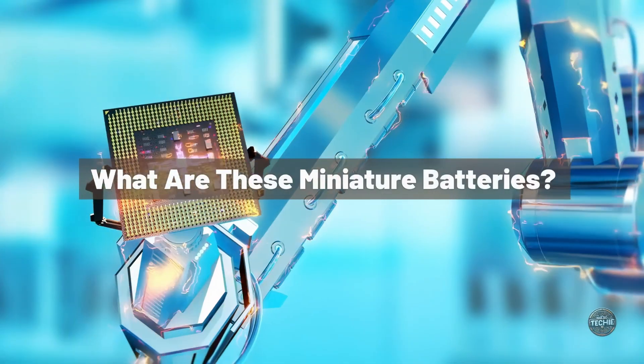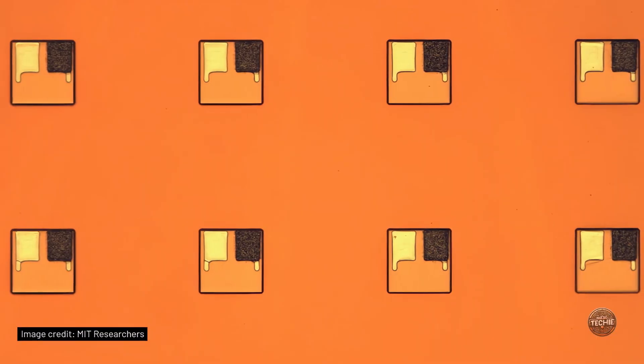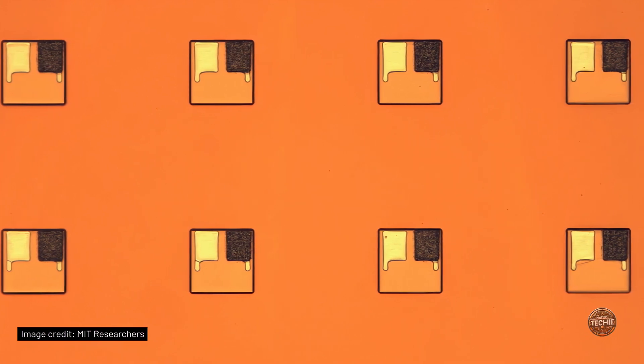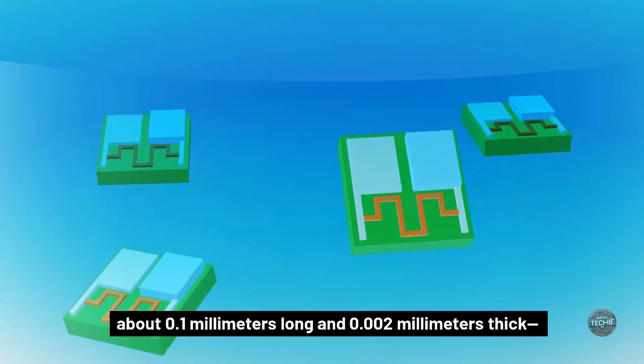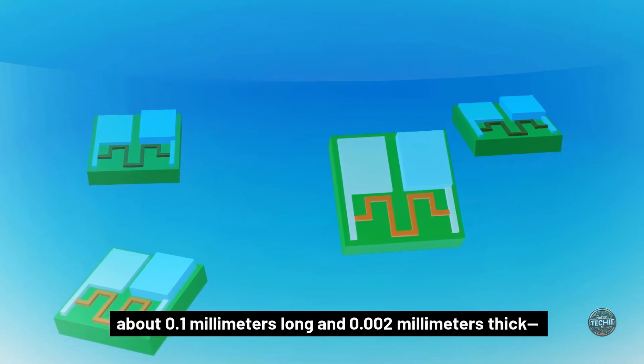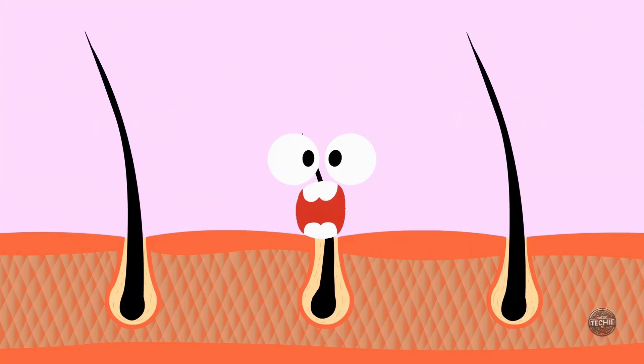What are these miniature batteries? The MIT team has created zinc air batteries so tiny that they are smaller than a grain of sand. To put it in perspective, these batteries are about 0.1 millimeters long and 0.002 millimeters thick. That's thinner than human hair.